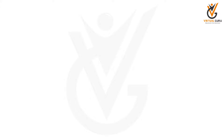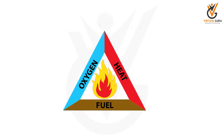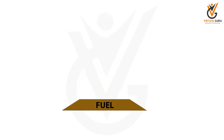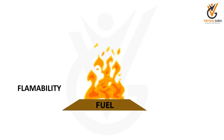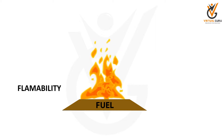Properties of flammable materials — until now we have seen that one of the major elements for fire is fuel. What is fuel? It should have some property. Let us discuss the properties one by one. First: flammability. It is the ability of a chemical to burn or ignite, causing fire or combustion. It is easily ignitable and can catch fire.